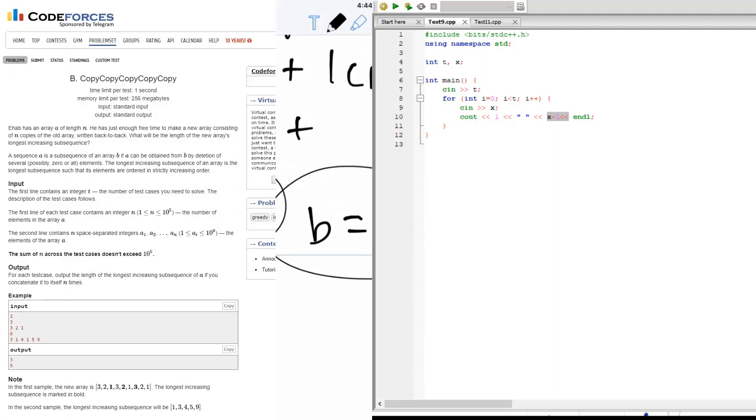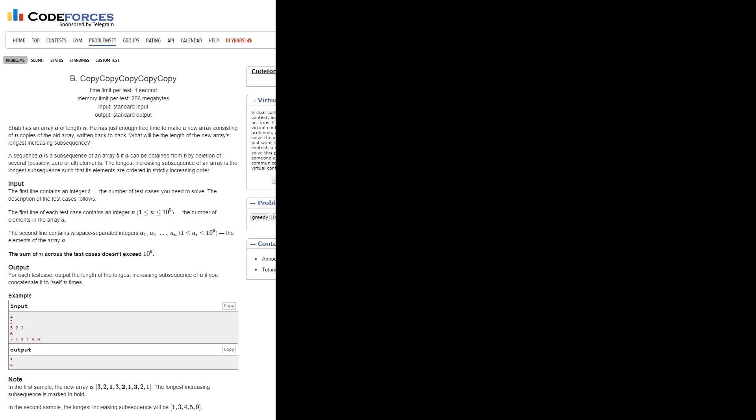Let's look at problem B. In problem B, we have t test cases, but in each test case, we have an array of length n. So there's n numbers in the array, and we're going to copy the array n times. Once we copy it n times, we need to output the longest increasing subsequence in the array.